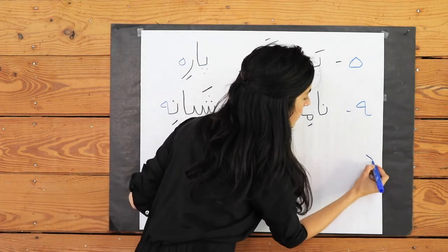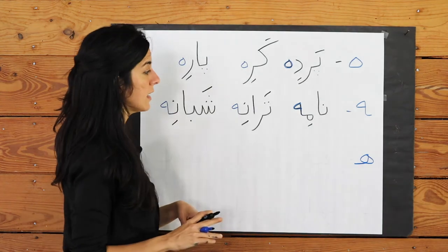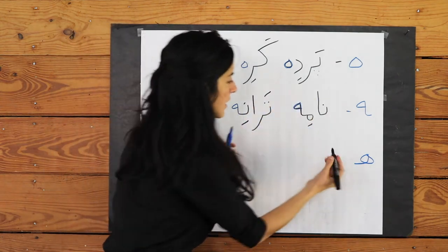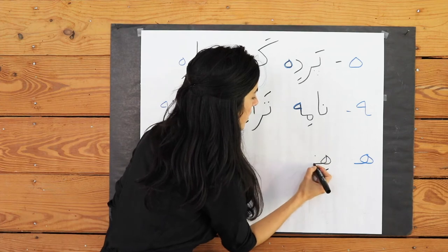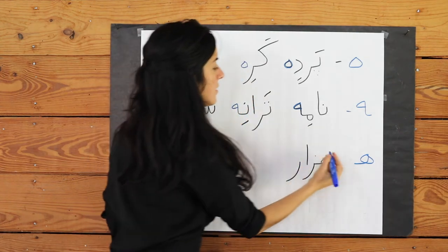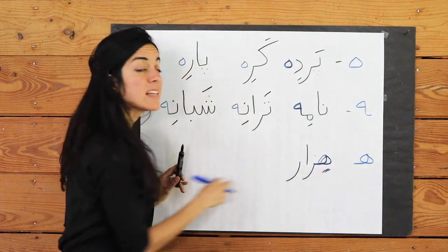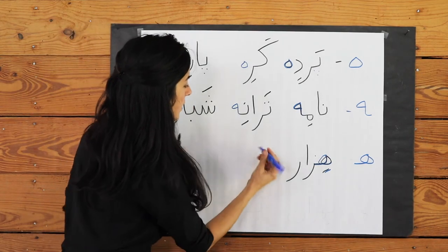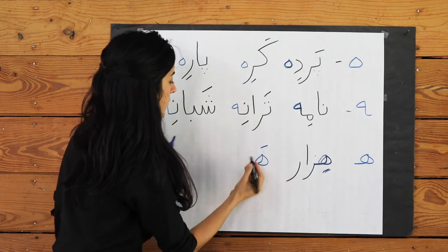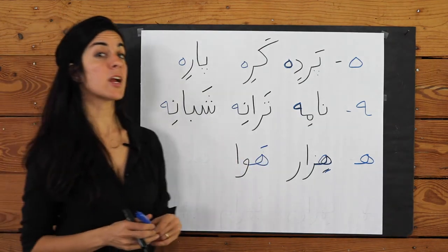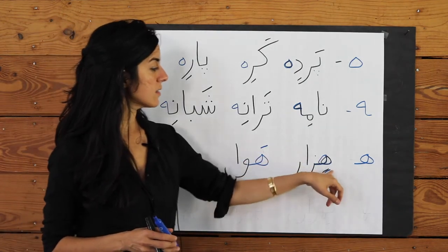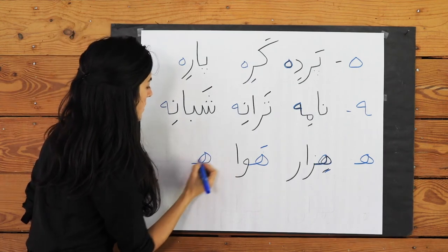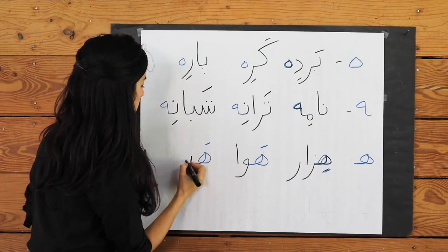We've seen a lot of examples of H at the beginning of a word connected to something afterwards. Let's look at it again. Hezar — and that is a thousand, Hezar. And Hava — that is air — H with an A accent. When it comes at the beginning of the word it looks like this: Hava. You can learn to identify the many faces of the letter H.